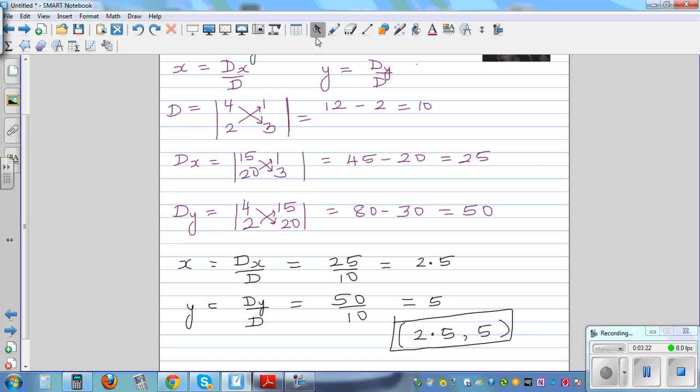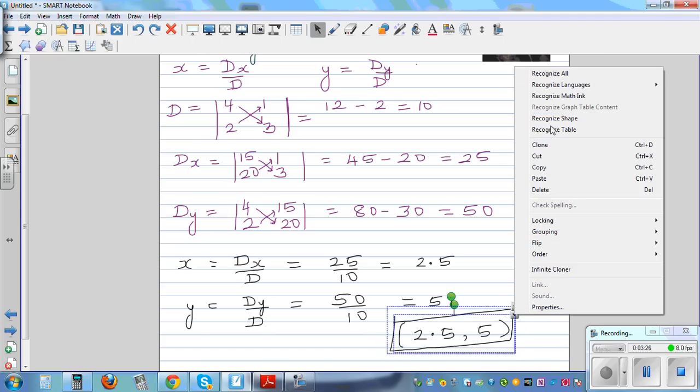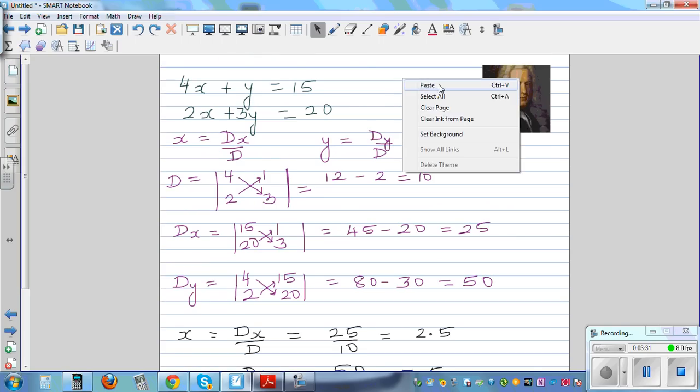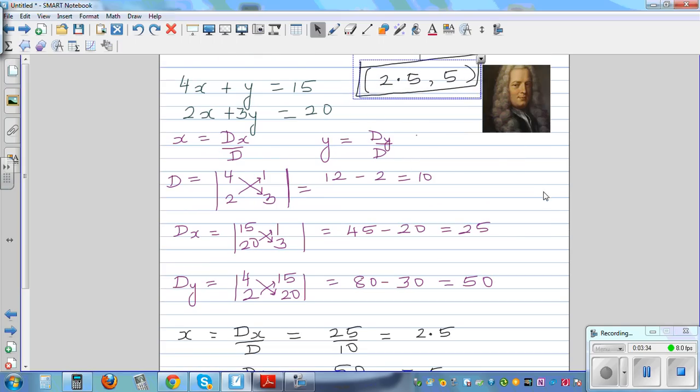So let me copy and paste this. This is the answer. So if you put it, if you put this here. When x is 2.5, y is 5. So 4 times 2.5 is 10 plus y is 5, which is 15. So equation 1 is satisfied.